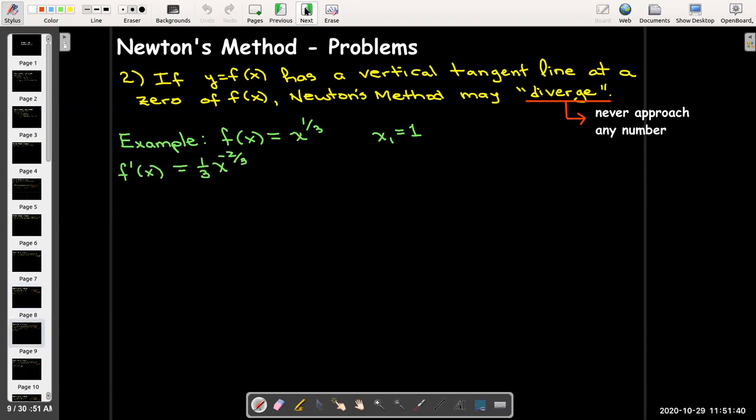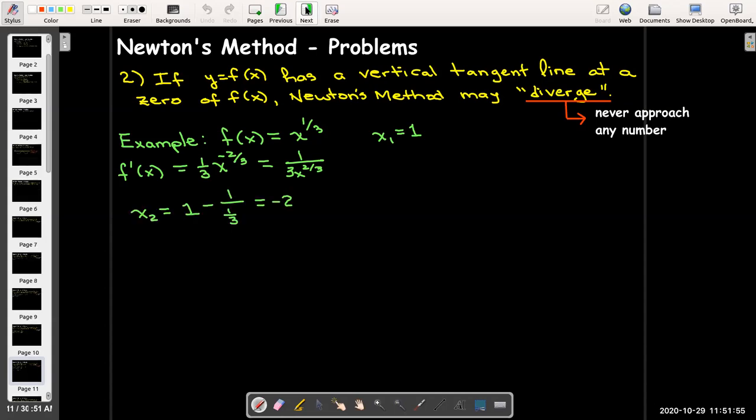Use the power rule to calculate the derivative and we'll write that as a fraction. So 1 over 3 times x to the 2 3rds power, and let's look at some approximations after x sub 1. So x sub 2 would be 1, the initial approximation, and subtract the ratio. Well the cube root of 1 is 1 and 1 over 3 times 1 is 1 3rd. So that's going to be 1 minus 3 which gives us negative 2.